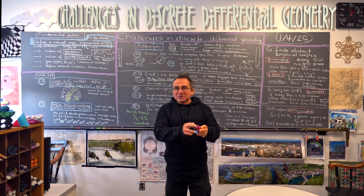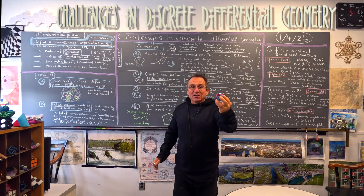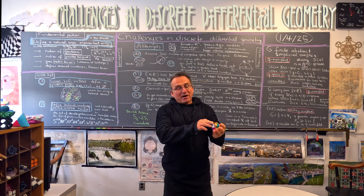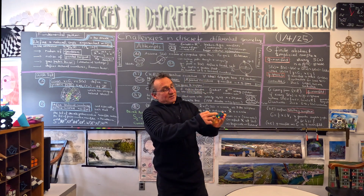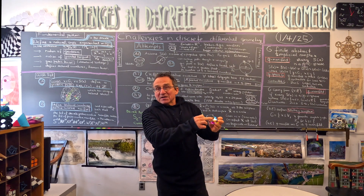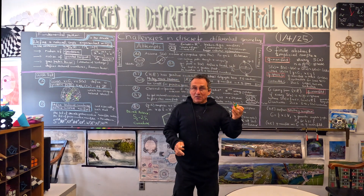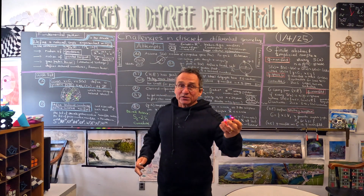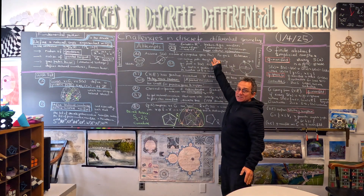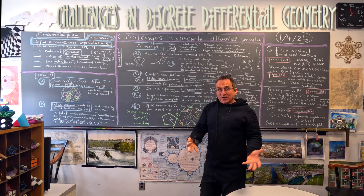The problems are already evident if you look at the simplest examples like the icosahedron. If you look here, we can take a path and then try to continue it. But we already have a problem defining a natural continuation when we have an odd vertex degree.